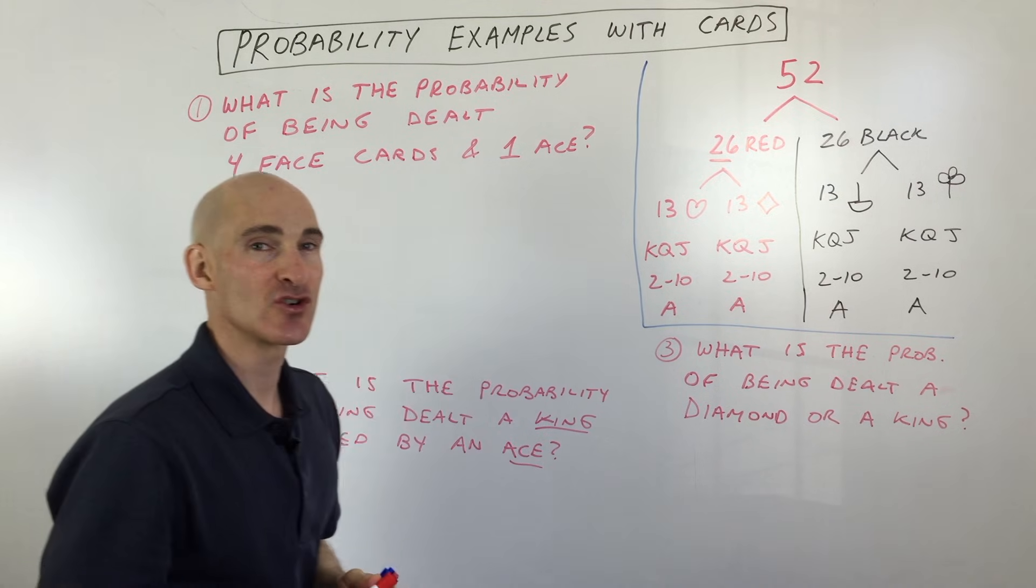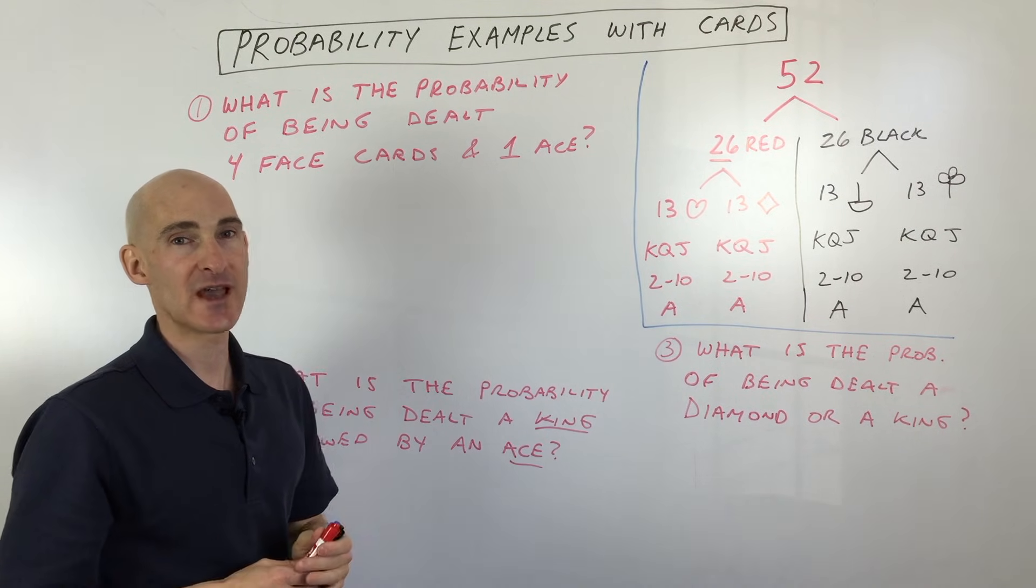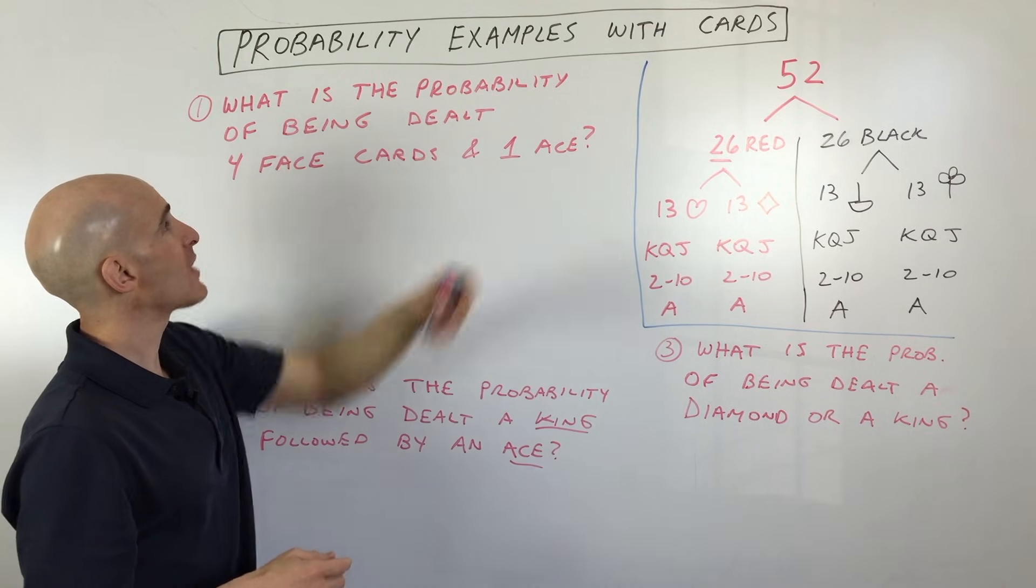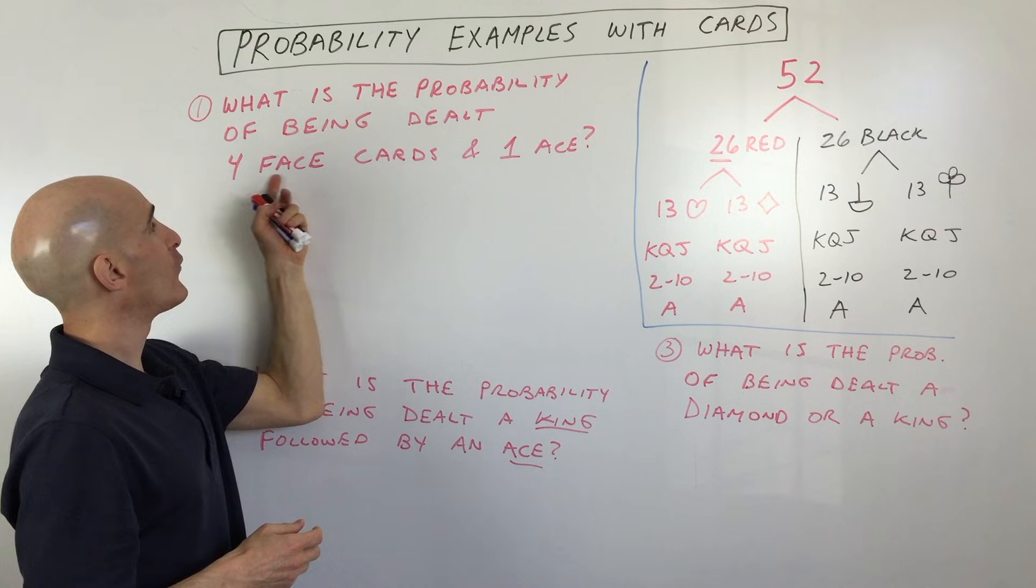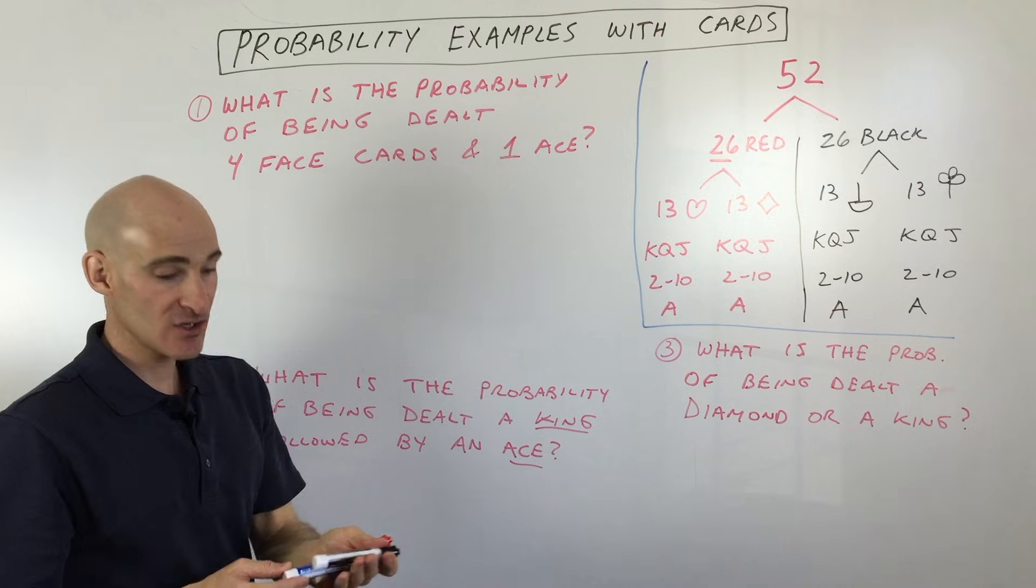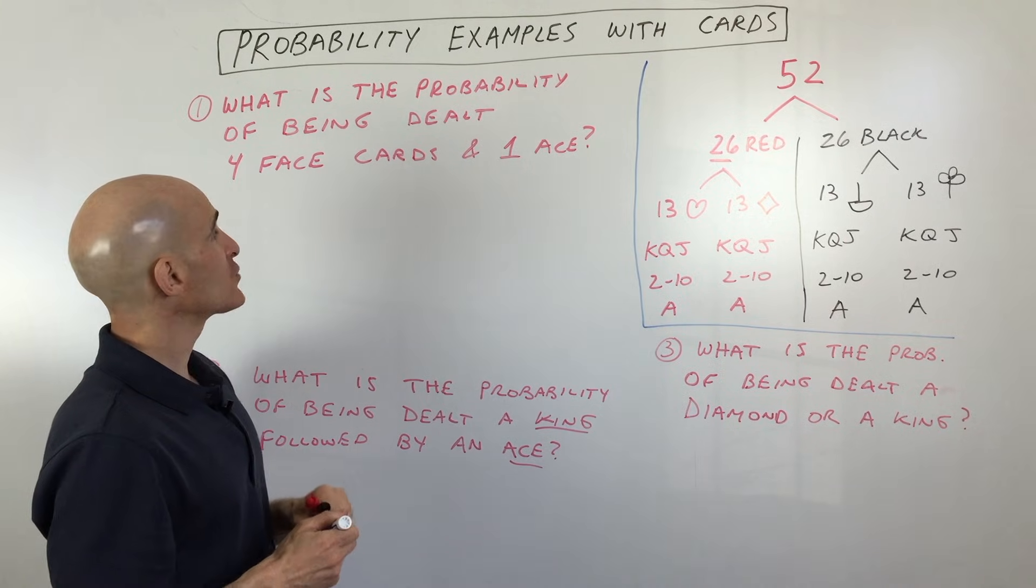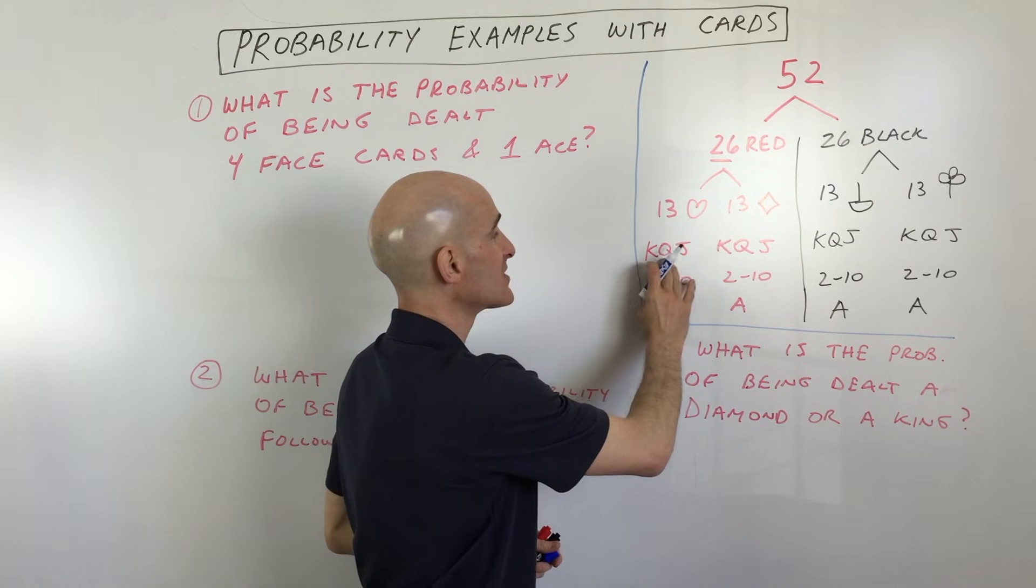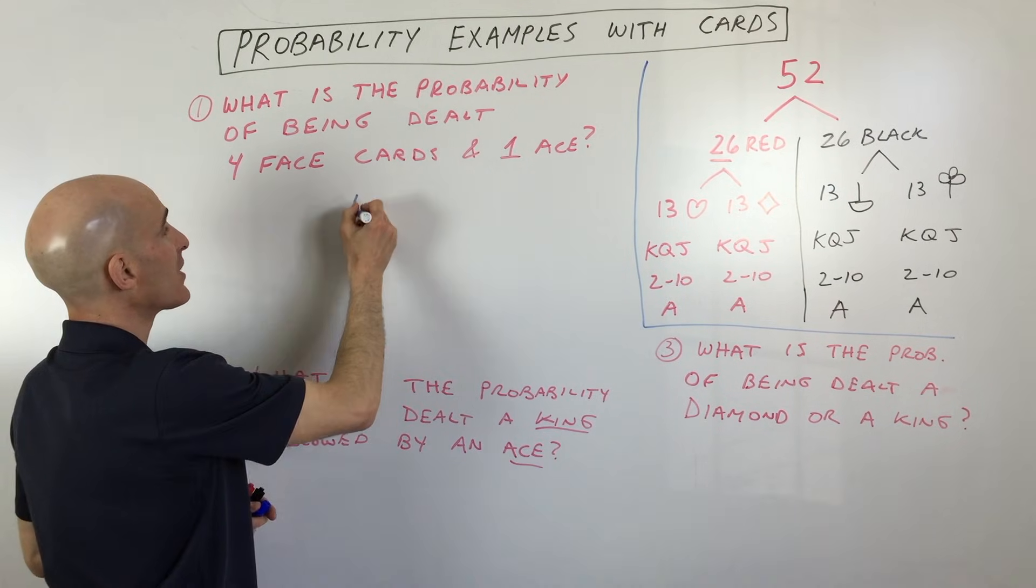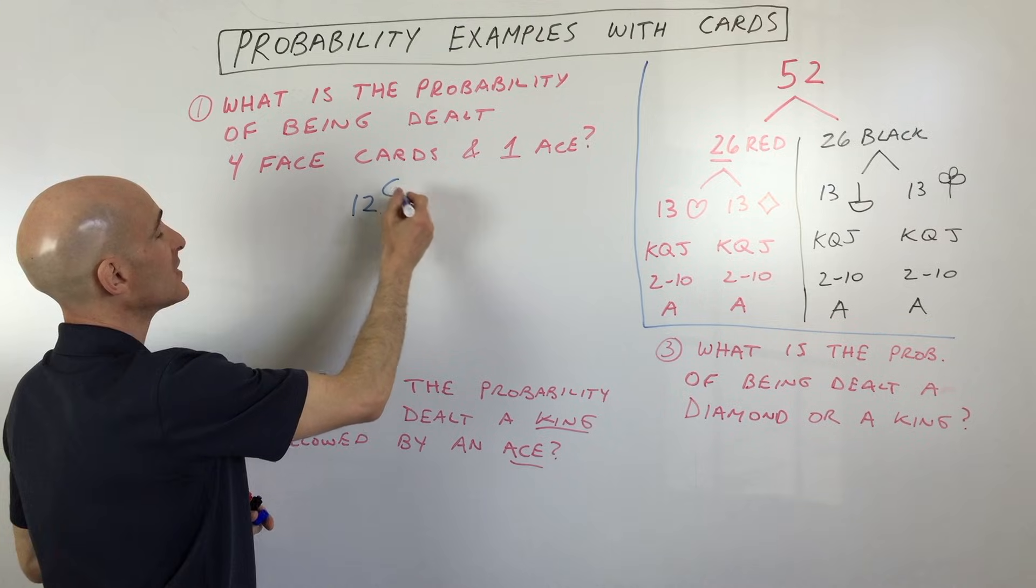So let's get into some examples, and I'll show you how to work with some probability examples here using playing cards. The first one says, what is the probability of being dealt four face cards and one ace? So that's an interesting question. First we have to analyze how many face cards there are, and you can see there's 3, 6, 9, 12. So out of 12 face cards, we're choosing four.